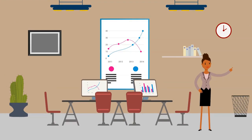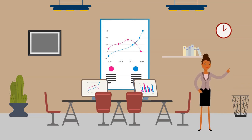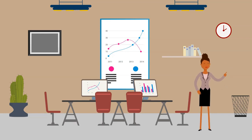Game theory is a framework for thinking about social events with competing actors. Game theory is, in some ways, the study of strategy, or at the very least, the optimal decision-making of independent and competing actors in a strategic situation.